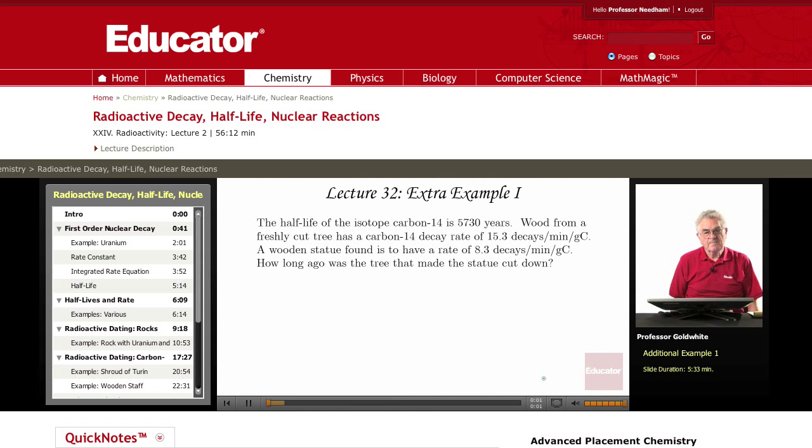Carbon-14 is a radioactive isotope of carbon that is constantly being formed in the stratosphere, way above our heads, by the action of cosmic rays, particles from outer space, interacting with nitrogen-14.